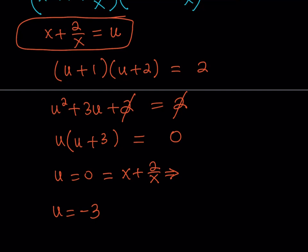But this is going to give me x squared plus 2 equals 0 because that's 0. When you multiply both sides by x it becomes 0. And notice that x cannot be 0 because we know it's not a solution.